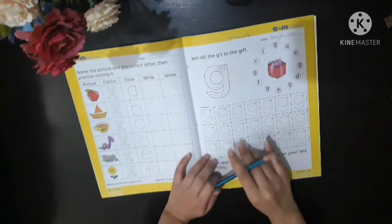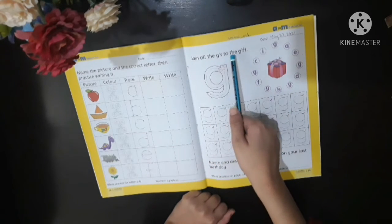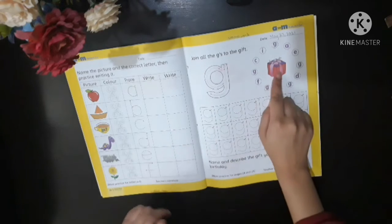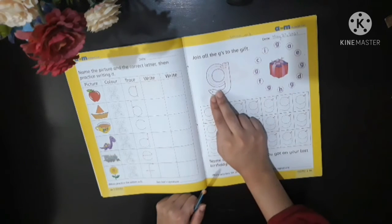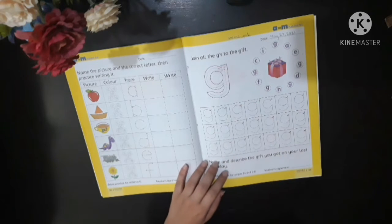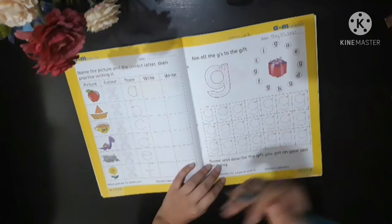We have to trace this and then we have an activity. It says join all the girls to the gift. So we have a gift and you know that gift begins with the letter G. Goat, girl, good, grapes, grandparents.